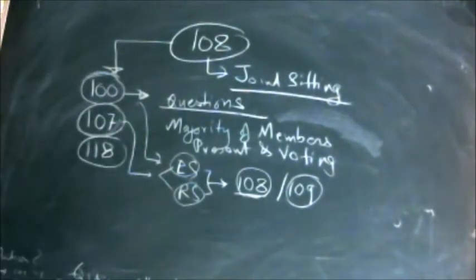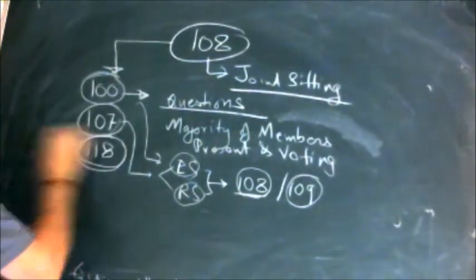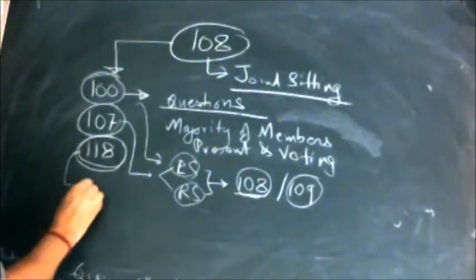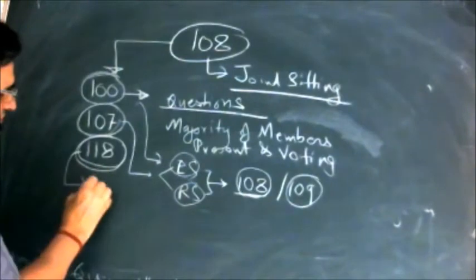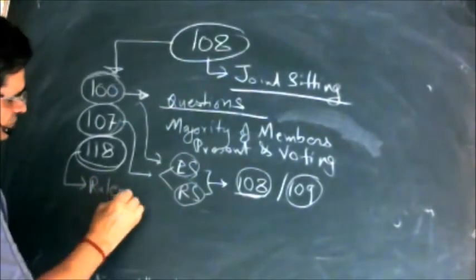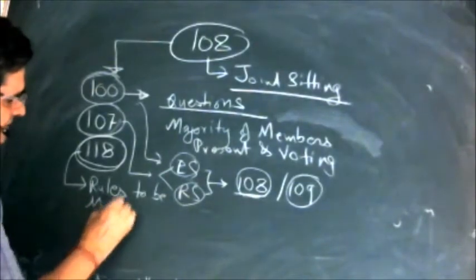Article 107 also deals with manner of introduction of bill. That's again a separate thing, we'll not touch upon that now. Article 118 also deals partially with 108 because it talks about the rules to be made by the president.